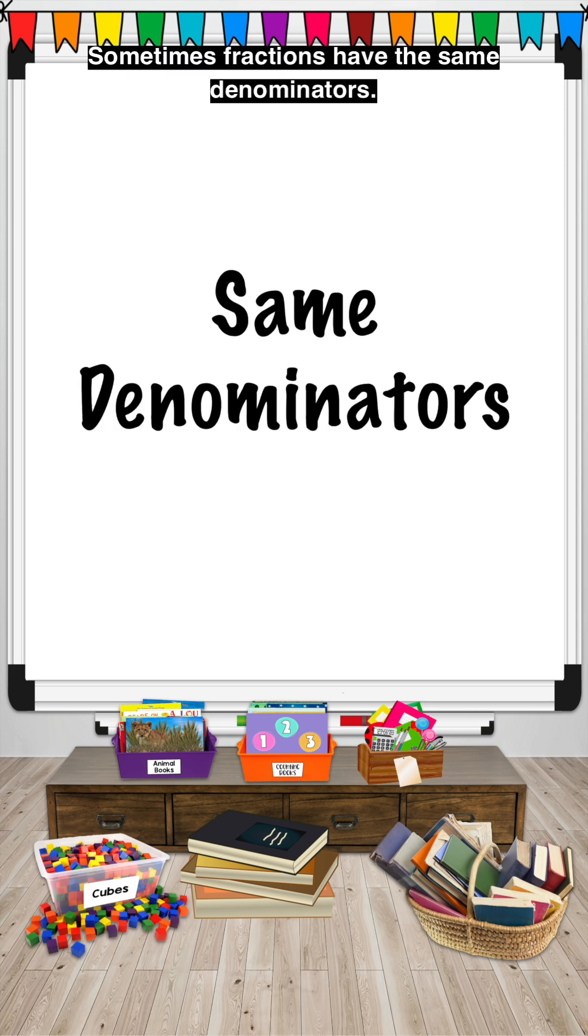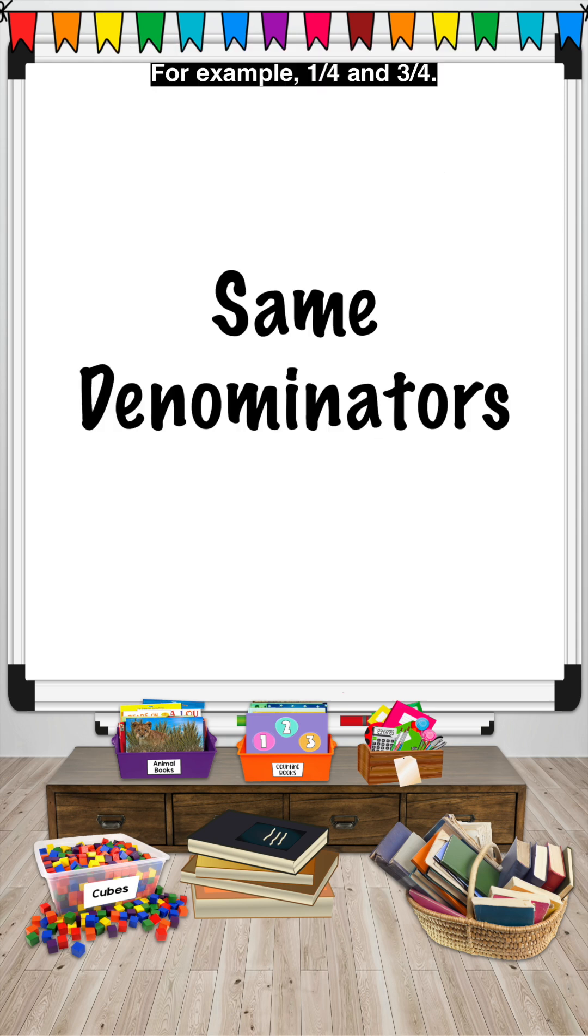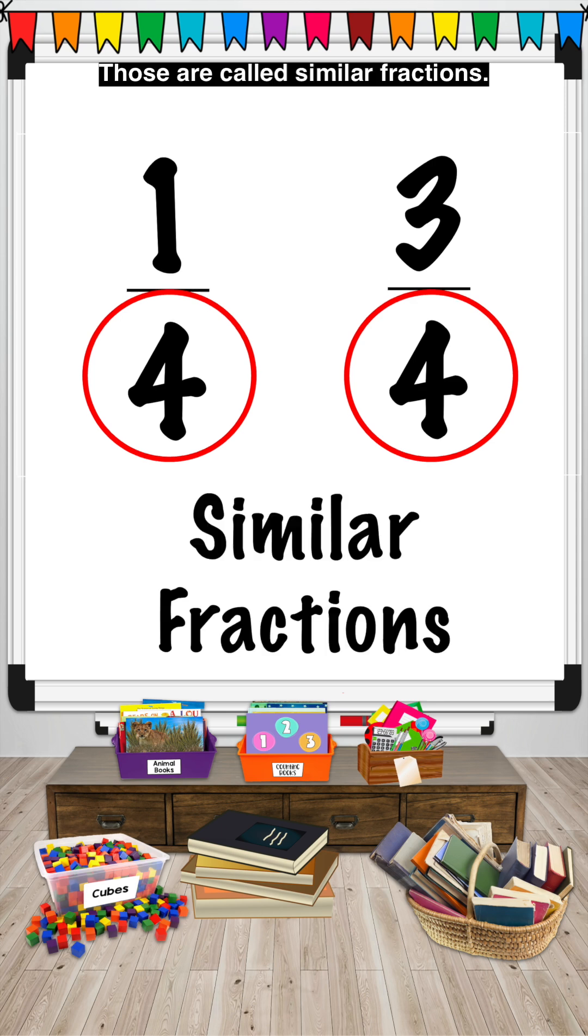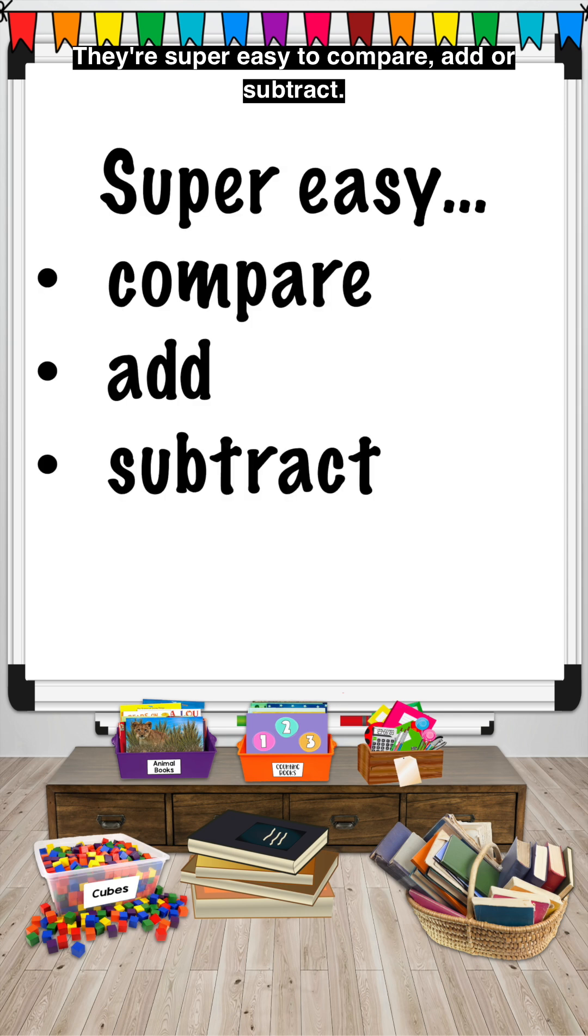Sometimes fractions have the same denominators. For example, one-fourth and three-fourths. Those are called similar fractions. They're super easy to compare, add, or subtract.